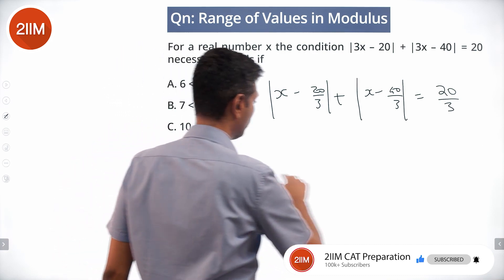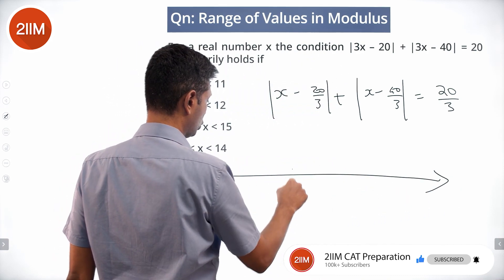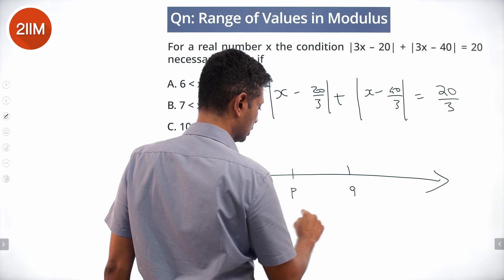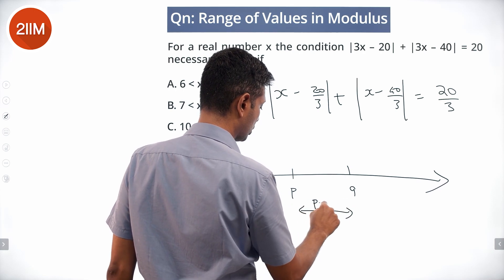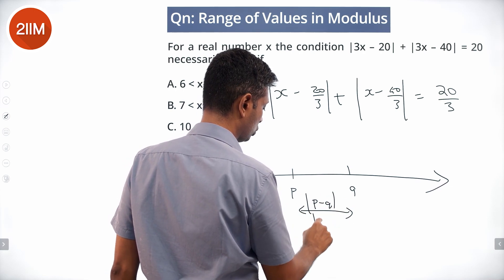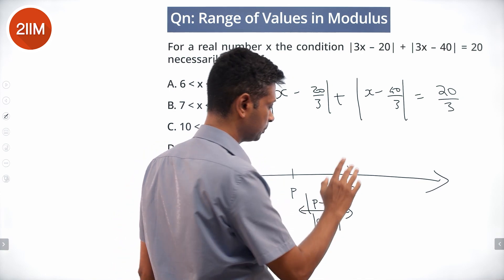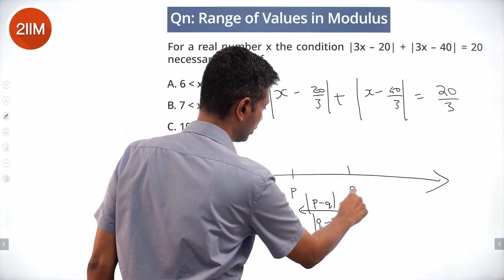What are we going to do? We know that if you have two points P and Q, distance between them is modulus of P minus Q which is nothing but modulus of Q minus P.